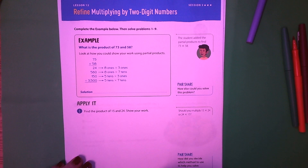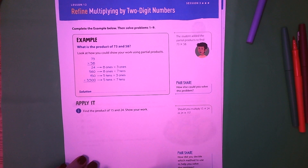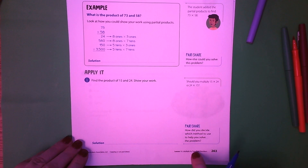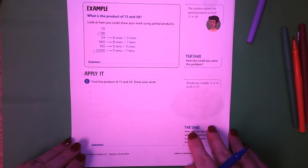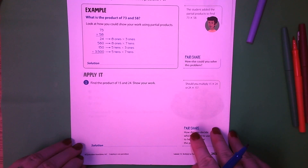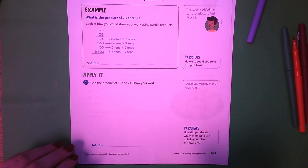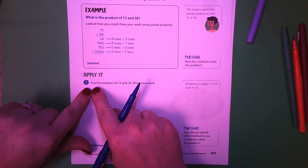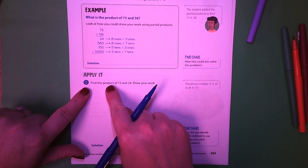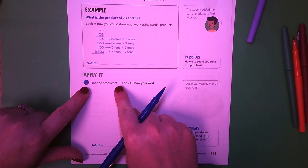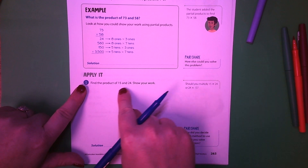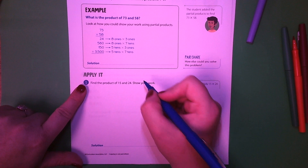Alright, if you are still watching this video or if you have turned it back on, that means you are done with pages 263 through 266. So right here on 263, you're going to be checking over your answers. This first one says: find the product of 15 and 24, show your work.